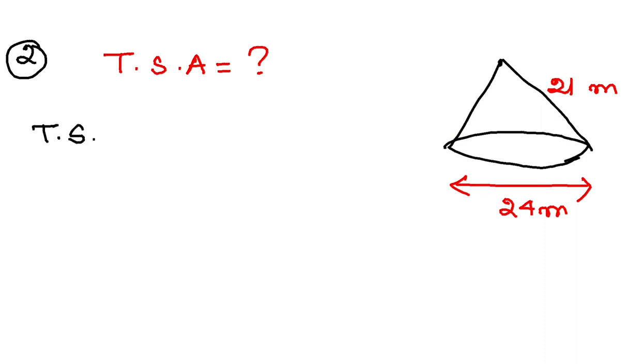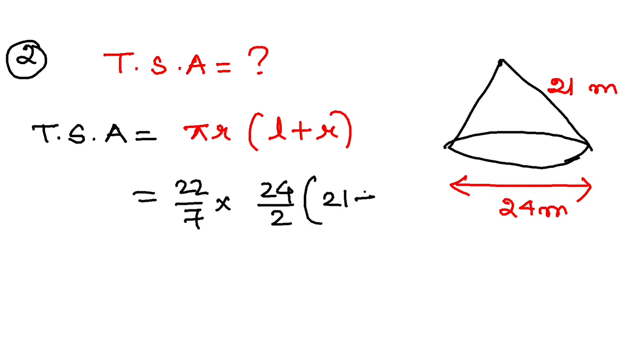We know TSA of a cone formula is πr into L plus r. If we substitute the values: π is 22 by 7, radius is 24 by 2 which is 12, slant height is 21, and radius is again 12. You can calculate these values and the final answer is 1244.57 centimeter square. Very simple, isn't it.